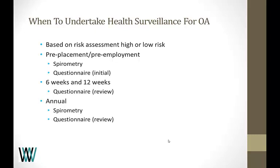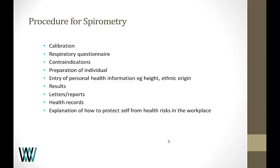When to undertake health surveillance for occupational asthma is based on the risk assessment — how much substance the person is exposed to, the type of person, the type of work, and control measures. If it's high risk there's more surveillance; if there's low risk it can be minimal. You should be doing a pre-placement or pre-employment baseline with spirometry and questionnaire. For high risk, add a six-week and twelve-week questionnaire, then annually spirometry and questionnaire. For low to moderate risk, adapt the program accordingly.